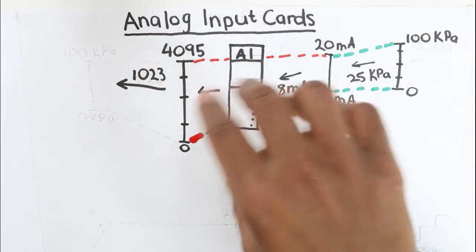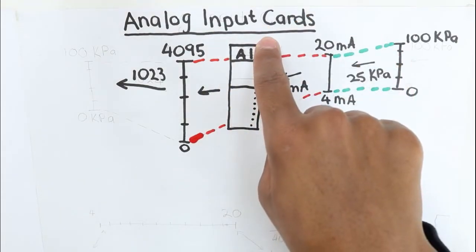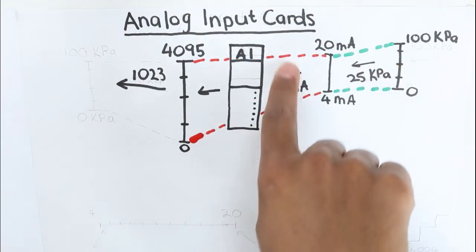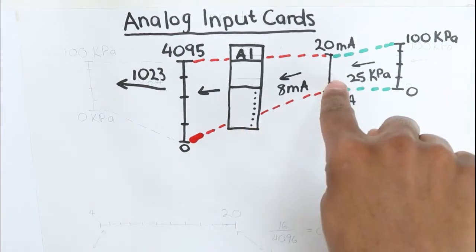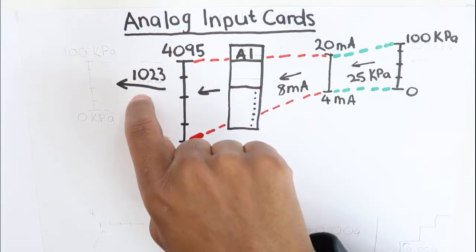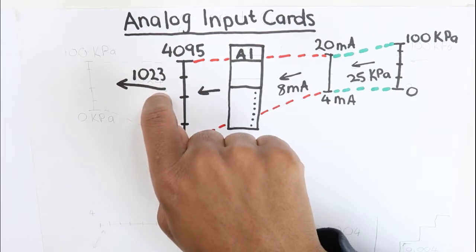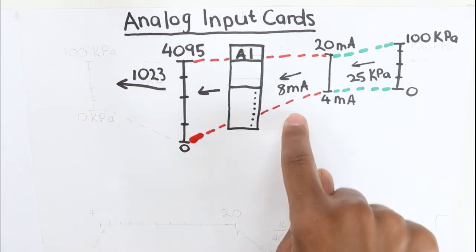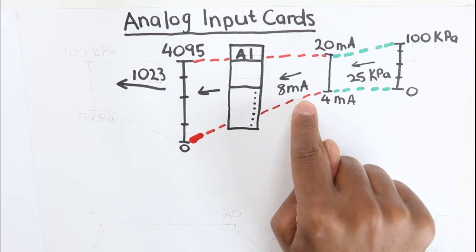So in your PLC program or the programming interface of your PLC, if you open the register of the analog input card where this transmitter is wired to, there you'll see 1023, which indicates the current value of 8 milliamps.